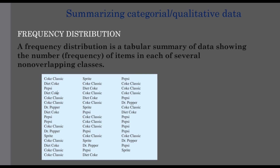First we are concentrating on the frequency distribution. We are concentrating on the category or qualitative data. The summary is a tabular formula for that. We are concentrating on frequency distribution as a tabular summary of the data showing the number of items in each class.